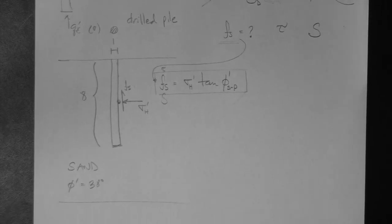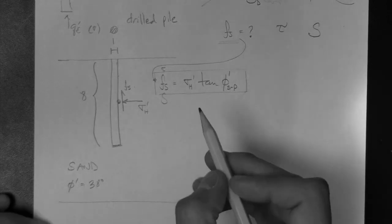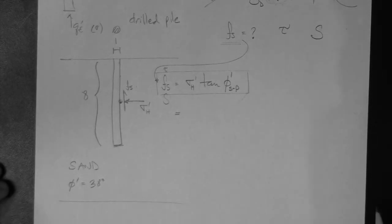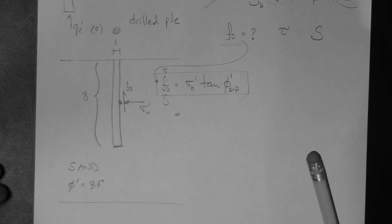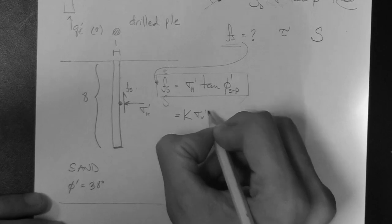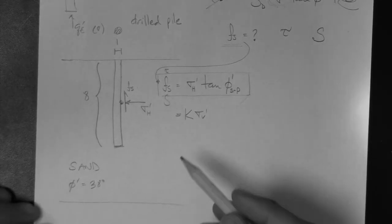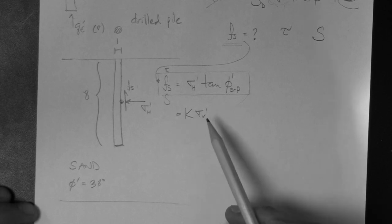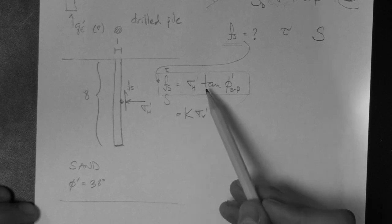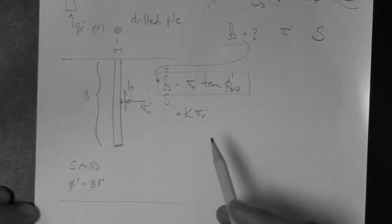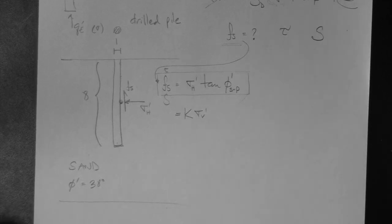So our equation for Fs uses the horizontal stress. The horizontal stress at a point equals K times the vertical effective stress. If we know K, we can determine the horizontal stress once we have the vertical effective stress at the midpoint, which is straightforward.